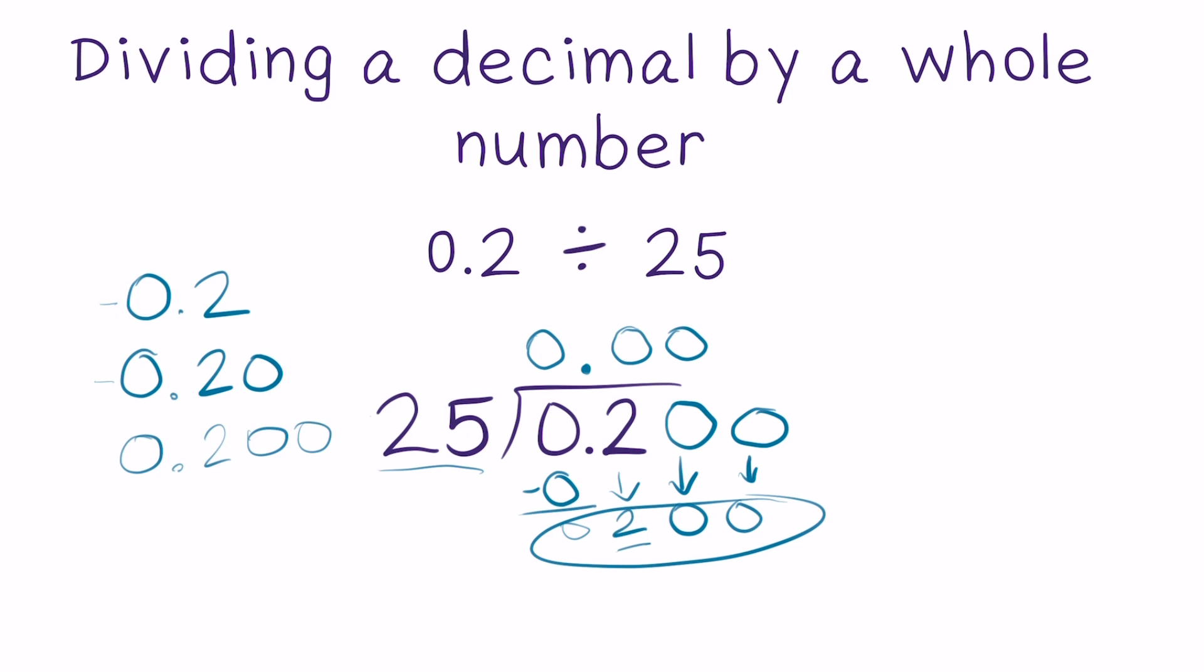Now I can divide. 200 is divisible by 25. 25 goes into 200 eight times. Eight times 25 is equal to exactly 200, which leaves us with nothing left over. After going through all of the steps, we can determine that 2 tenths divided by 25 equals 8 thousandths.